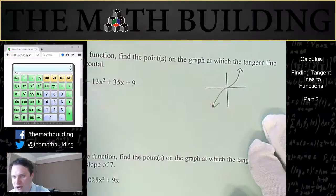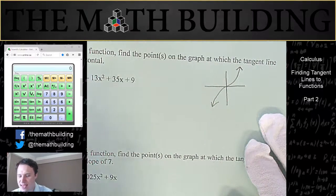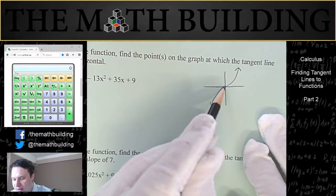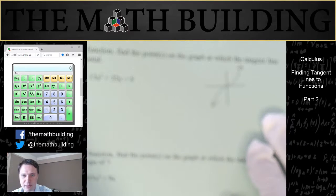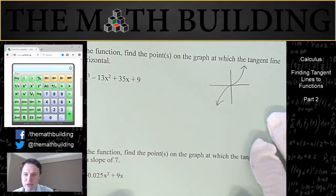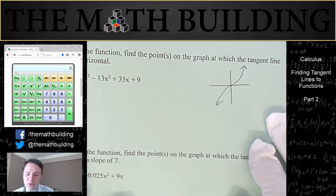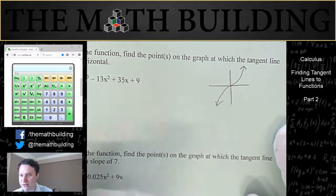This is what the parent function of a cubic function looks like. And in fact, right here at this point, you can show by doing the process we're about to do, you can show that the derivative at that point is going to equal zero. Right here at zero, zero.